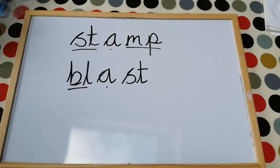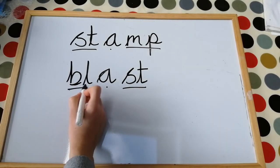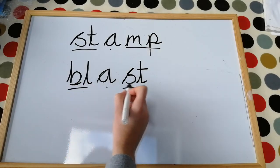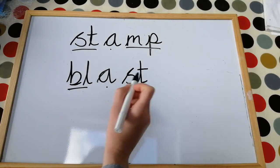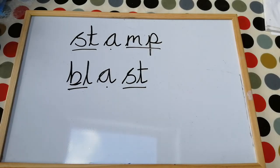So let's make sure when we blend it all together that that makes sense: 'bl' - 'ah' - 'st' — 'blast'. So hopefully that is a helpful wee reminder of just what we mean by our blend sounds — sounds that come at the beginning or at the end. It's two letters that are blended together and help us spell longer words.